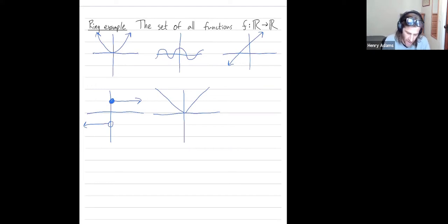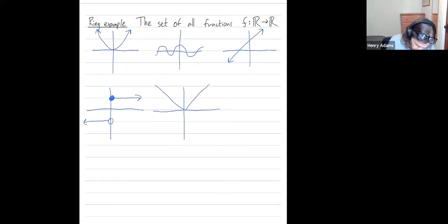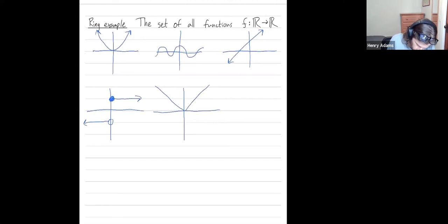In a ring, I need to be able to add things. So what is f + g? Well, f + g is a function. I need to tell you what f + g does to an input x. This is just equal to (f + g)(x) = f(x) + g(x).